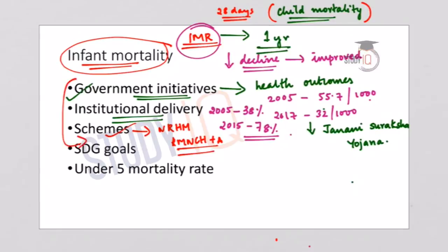With all these government interventions, India achieved better results in healthcare, especially in infant mortality rate and maternal mortality rate. All these indicate that India is moving closer toward achieving the Sustainable Development Goals — specifically the SDG target of ending preventable deaths of infants and mothers by 2030, addressing IMR (infant mortality rate) and MMR (maternal mortality rate).